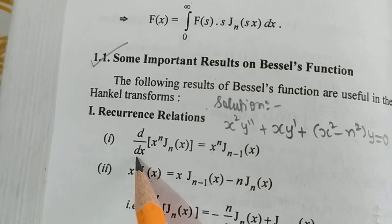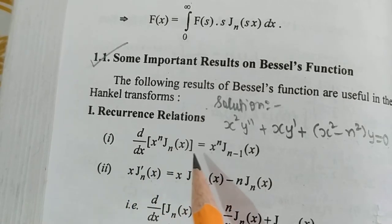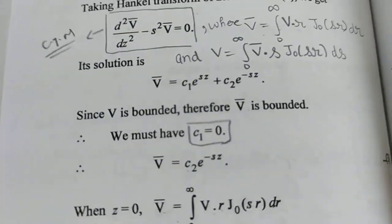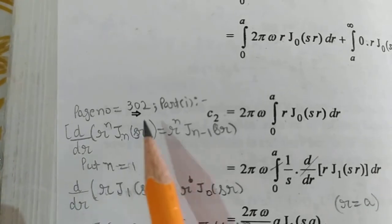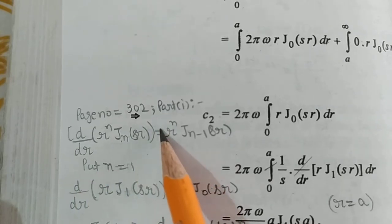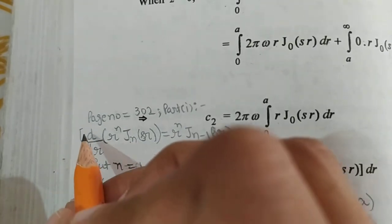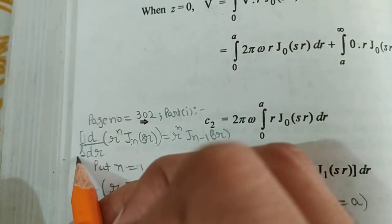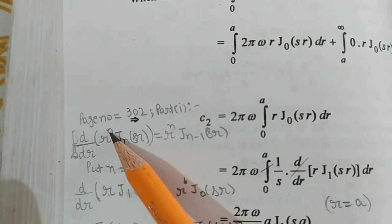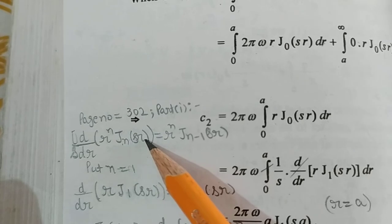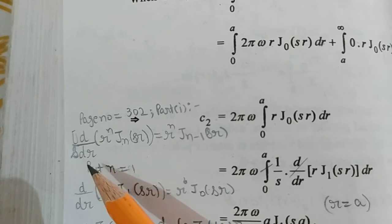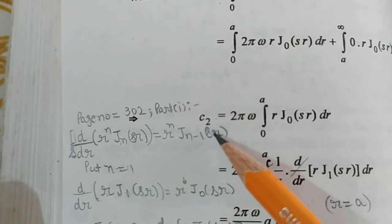The first recurrence relation is: d/dX [X^N · J_N(X)] = X^N · J_{N−1}(X). If we change X to SX, when we open the derivative a factor of S appears, so we divide by S to cancel it. That is why the 1/S factor appears here. Where there is no derivative, we do not divide.